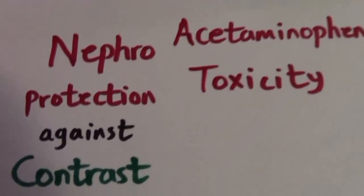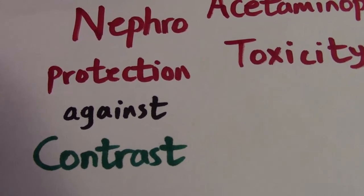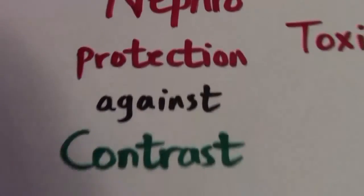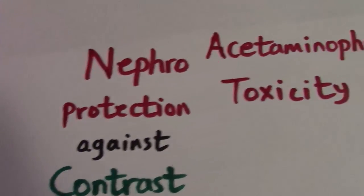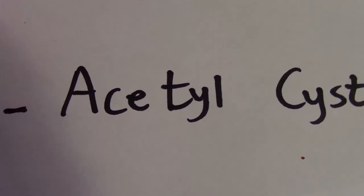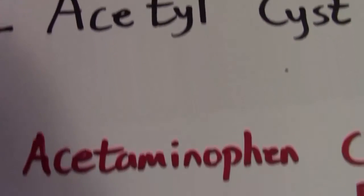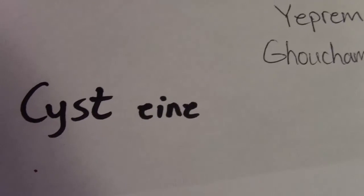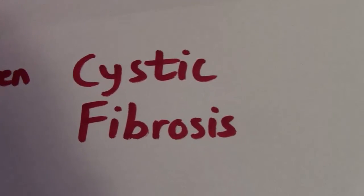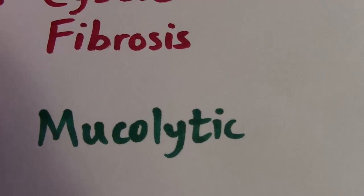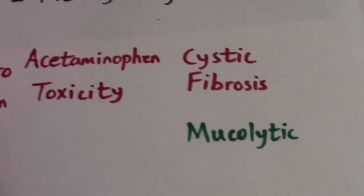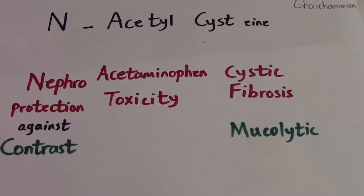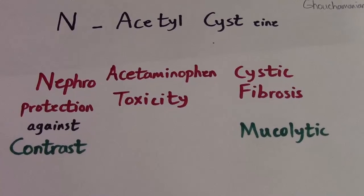So let's review it. N is for nephroprotection against contrast. Second indication: acetyl — acetaminophen or Tylenol toxicity. Third part: cysteine — cystic fibrosis, it's a mucolytic. So there are three different indications for N-acetylcysteine that you can memorize with this mnemonic.